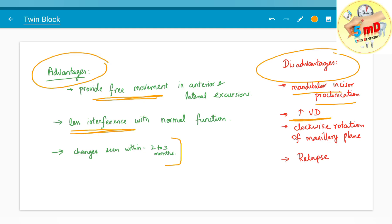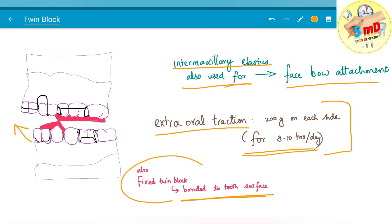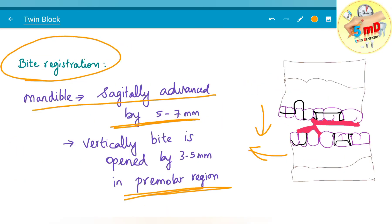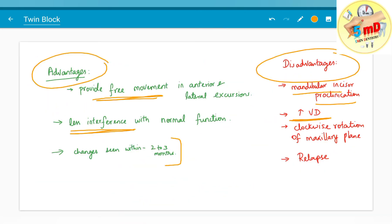The increased vertical dimension as we are increasing the vertical height by 3 to 5 mm while recording the bite, it is prone to vertical dimension increase once the treatment is complete and the clockwise rotation of maxillary plane is also noted. Relapse is common.